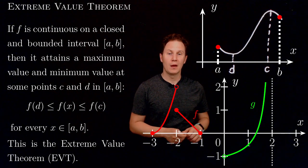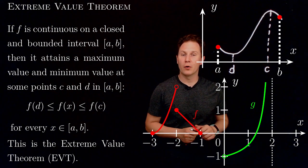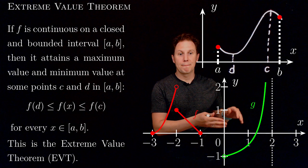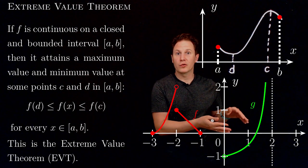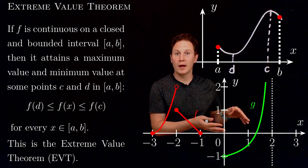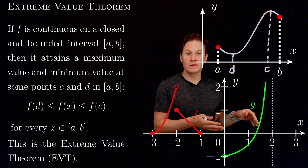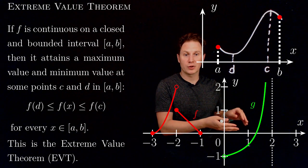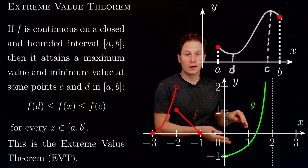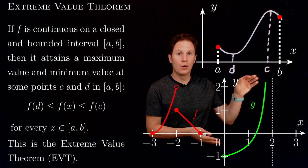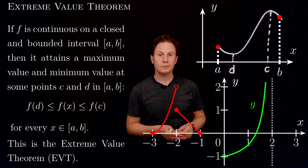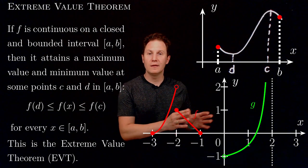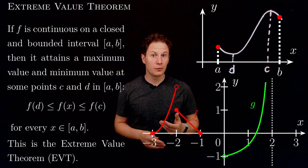Because of this discontinuity, no maximum value is taken on by this function in the closed interval — this is why continuity is so crucial. On the other hand, here is the graph of a continuous function g that is continuous on the open interval between 0 and 2, and that lets us have a function that doesn't take on a minimum value nor a maximum value.